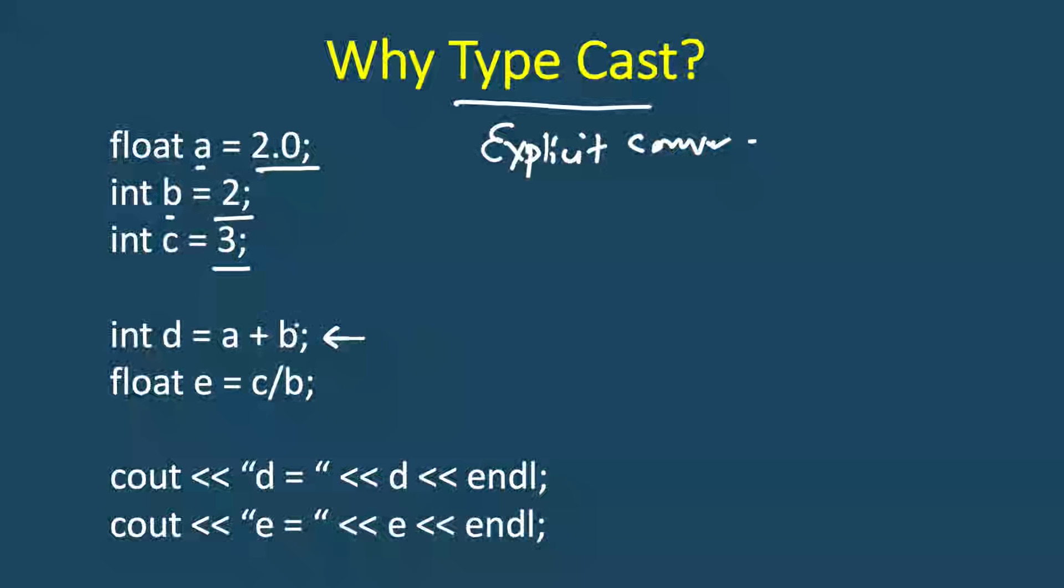So what will happen here? a is float so b will be promoted to float, so it will be like 2.0 plus 2.0 and it will be 4.0. And finally this result will be stored in an integer variable so it will be converted back to 4 integer.